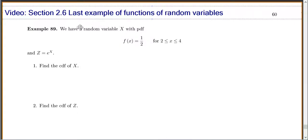In this example, we have a random variable X with this PDF: f(x) equals 1/2 for x between 2 and 4, and Z equals e to the x.